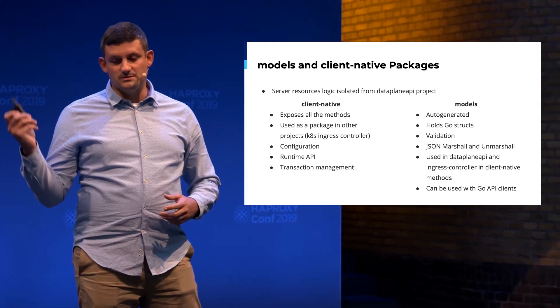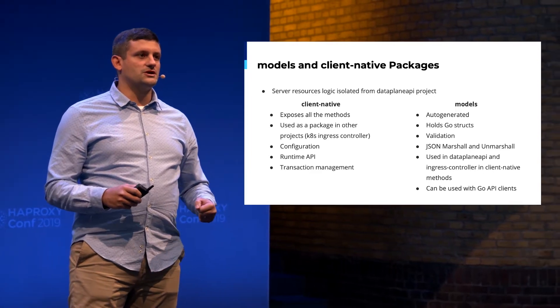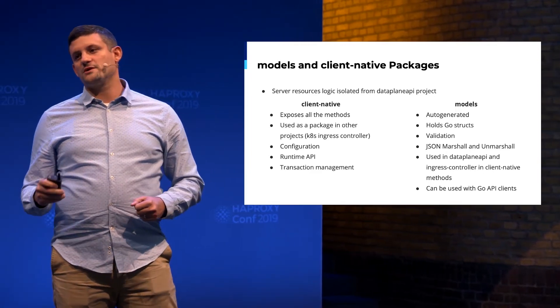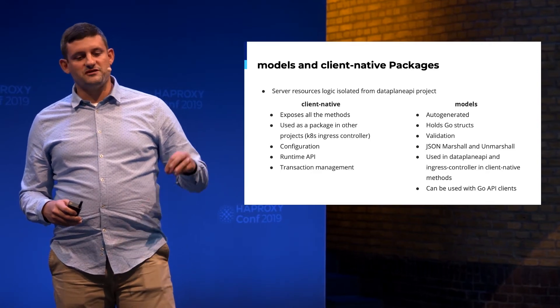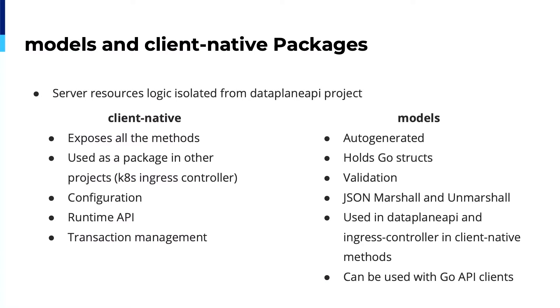The models package is totally auto-generated using the go-swagger tool. It uses the definitions from the OpenAPI specification YAML files to generate Go structs. Beyond those structs, it holds methods for validating them and methods for marshaling and unmarshaling into JSON.